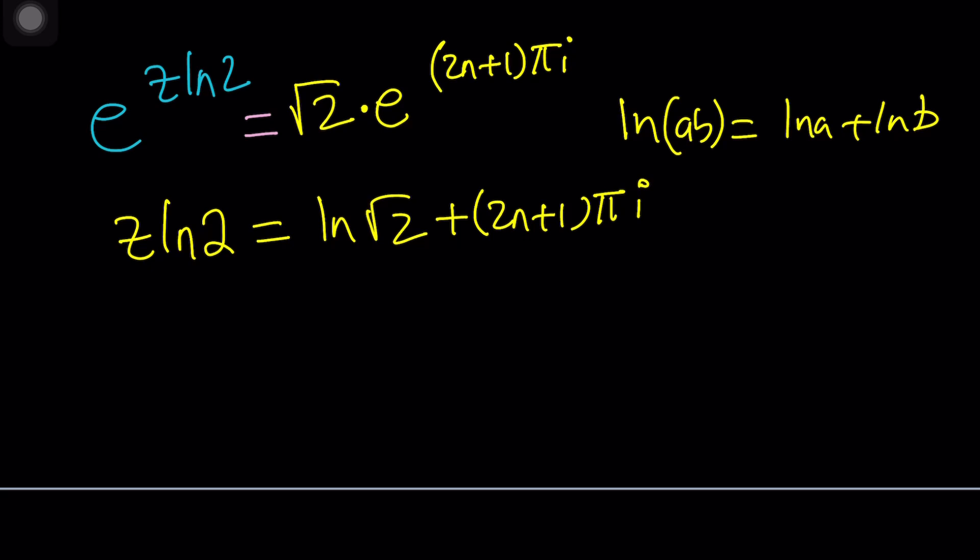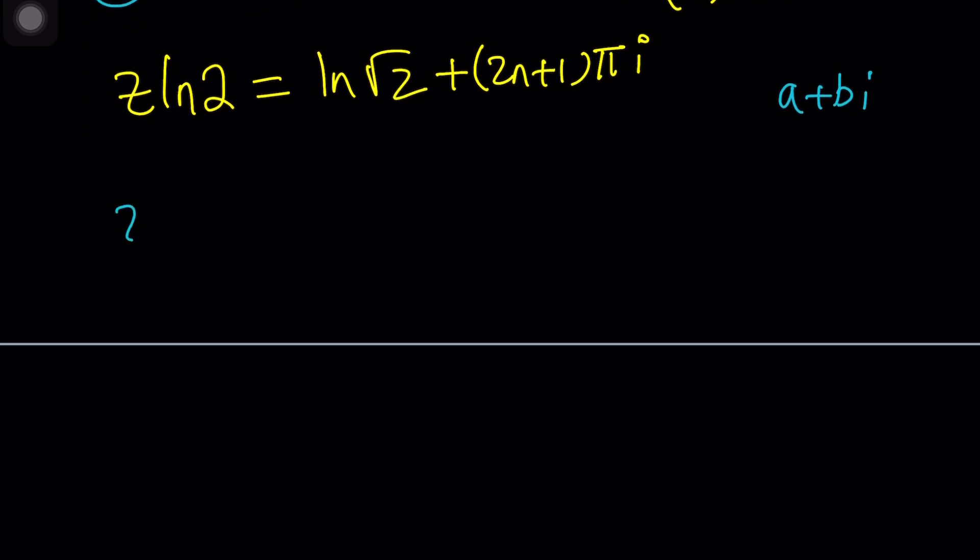With the A plus Bi form, which is the name of this channel, you can write it that way. Now let's find z from here. Let's divide everything by ln 2. We're going to get ln root 2 over ln 2 plus 2n plus 1 pi over ln 2 multiplied by i.